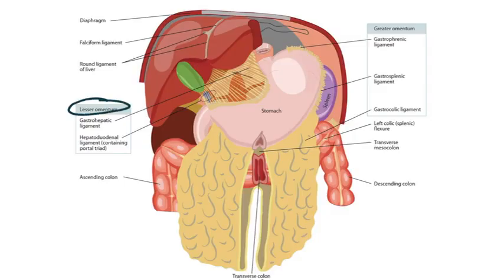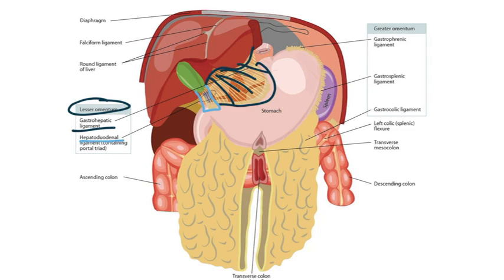So again, this is the lesser omentum. We have the hepatogastric ligament — gastro for stomach and hepatic for liver. We also have the hepatoduodenal ligament, which extends from the duodenum to the liver and contains the portal triad.